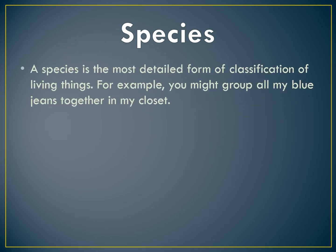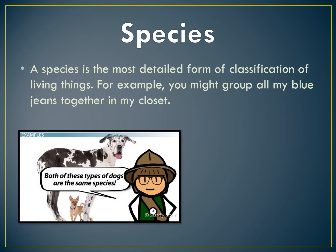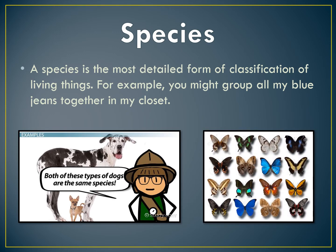The next word is species. A species is the most detailed form of classification of a living thing. For example, you might group all your blue jeans together in a closet. Both of these types of dogs are the same species — look how big one dog is and the other is a small chihuahua, but they are the same species. All those butterflies also come from the same species.